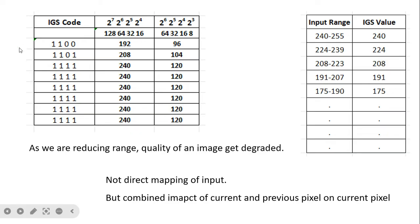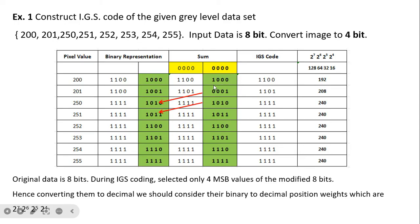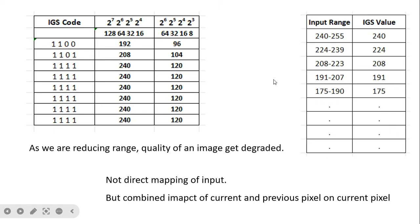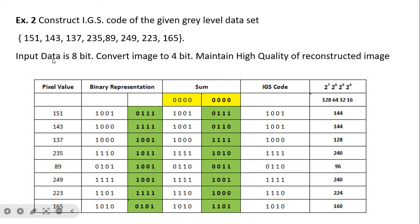If we go further to 2^5, 2^4, 2^3, 2^2, visual artifacts and false contouring occur because the number of colors reduces in the resultant image. The input range to IGS value mapping shows: 240–255 maps to 240, and 224–239 maps to 224. An important point: there is no direct mapping of the input. We cannot simply take a pixel value and map it directly, because the previous pixel's 4 LSBs are added to the current pixel, which may change its MSB position — this is exactly how the method reduces false contouring.